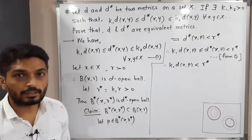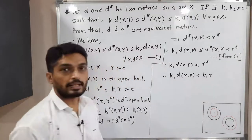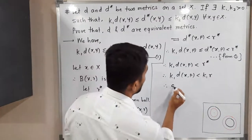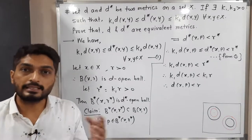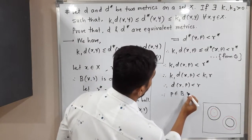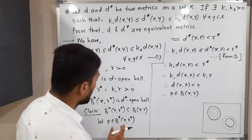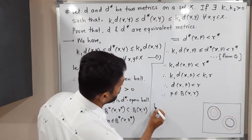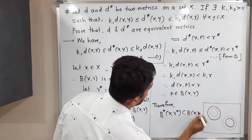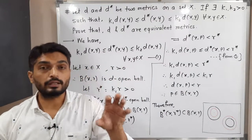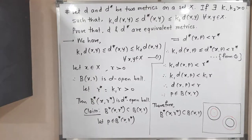Since r* = k1·r, we substitute: k1·d(x,p) < k1·r. Since k1 is a positive real number, we can cancel it from both sides, giving d(x,p) < r. This means point p lies inside the d-open ball B(x, r). Therefore p belongs to B(x, r), and we have proved B*(x, r*) ⊆ B(x, r). So any d-open ball contains a d*-open ball. Now we prove the converse: any d*-open ball contains a d-open ball.